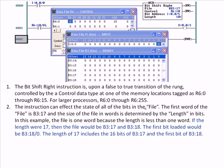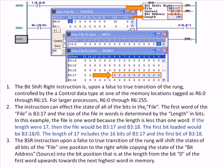With B3:17 and a length of 10, you're still working with bits 0 through 9. The BSR instruction, on a false-to-true transition of the rung, will shift the states of all the bits in the file one position to the right, while copying the state of the bit address — the source, which in this case is Input 5 — into the bit position at the length from bit 0 of the first word upwards toward the next highest word memory.